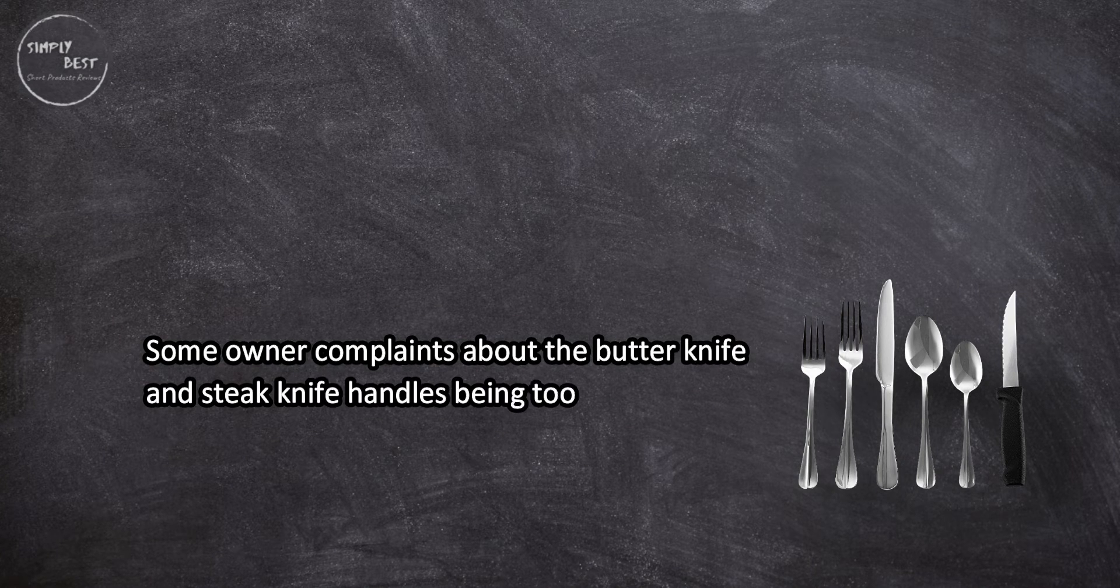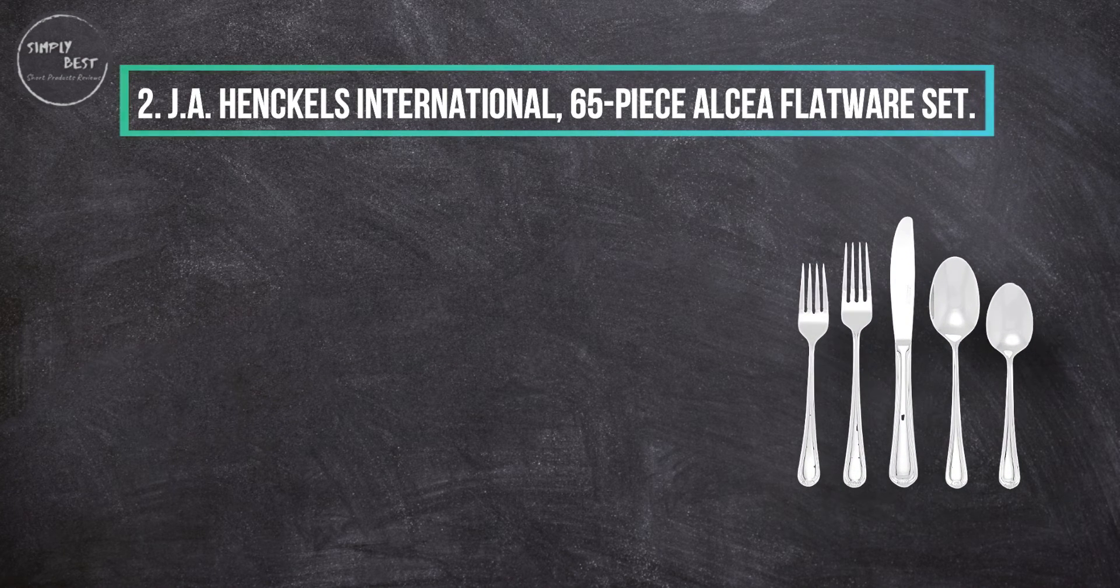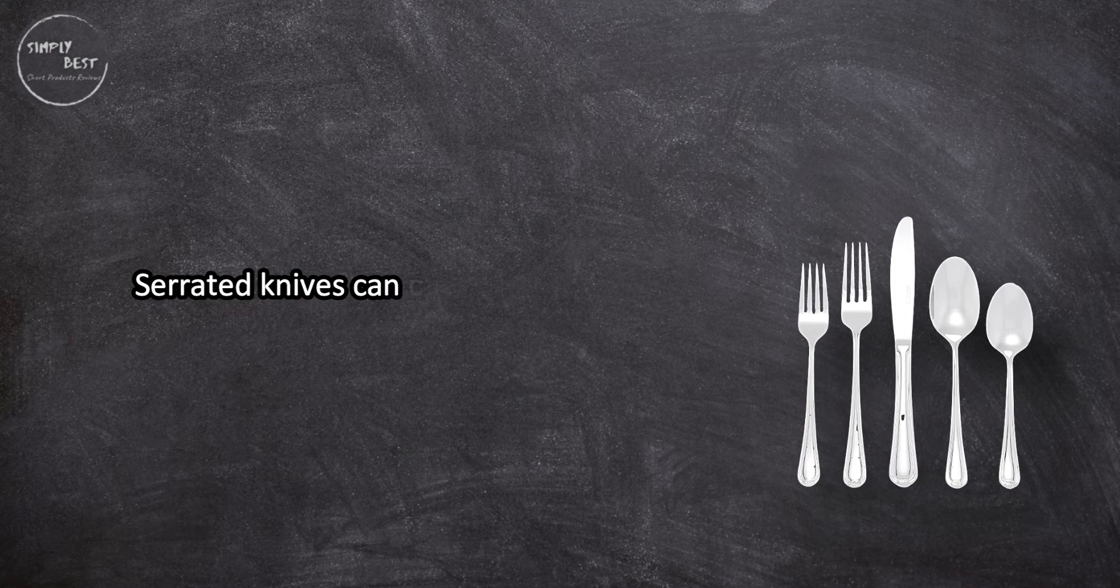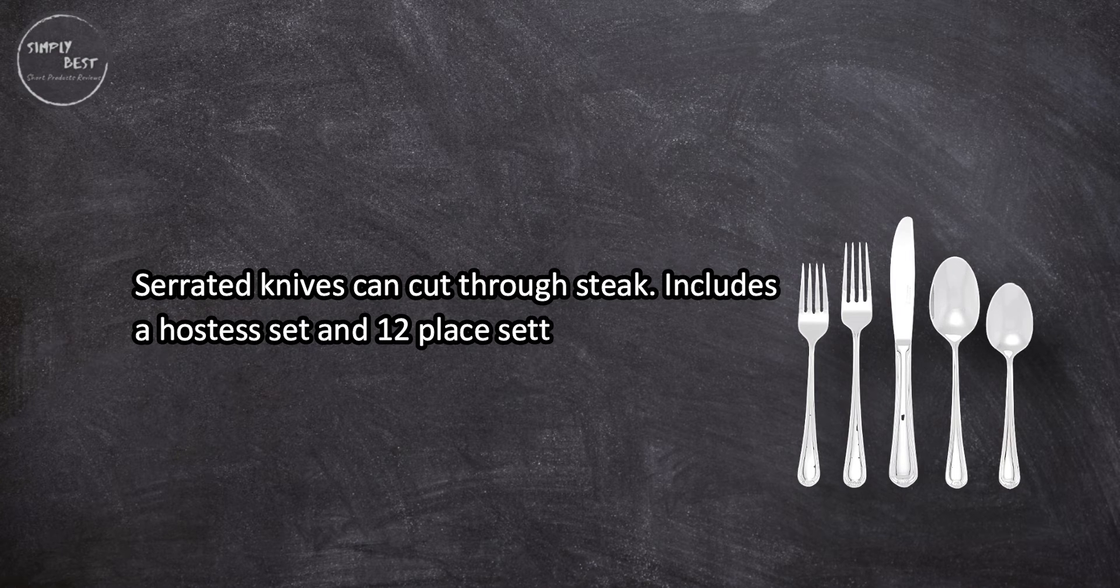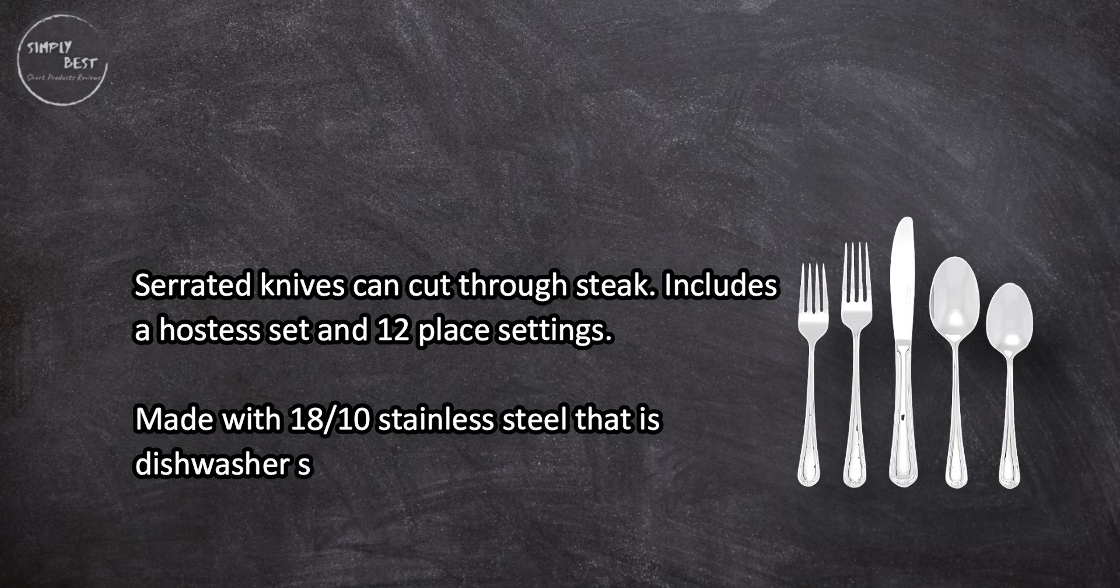At number two, J.A. Henckels International 65-piece flatware set. Serrated knives can cut through steak. It includes a hostess set and 12 place settings. Made with 18/10 stainless steel that is dishwasher safe.